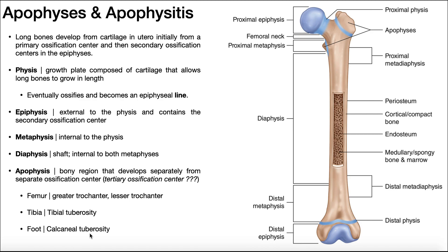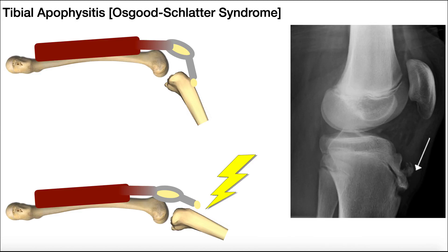These structures all develop as apophyses, so in pediatric patients they may not be fully fused to the rest of the bone. Once adolescence occurs and the growth plates fuse, they do become fused. So what might happen if you have a muscle attaching on one of these and you're chronically overusing it, pulling with lots of force over time? You'll create a tension overuse injury. The first one we're going to look at is on the tibia — it's called tibial apophysitis, or Osgood-Schlatter syndrome.